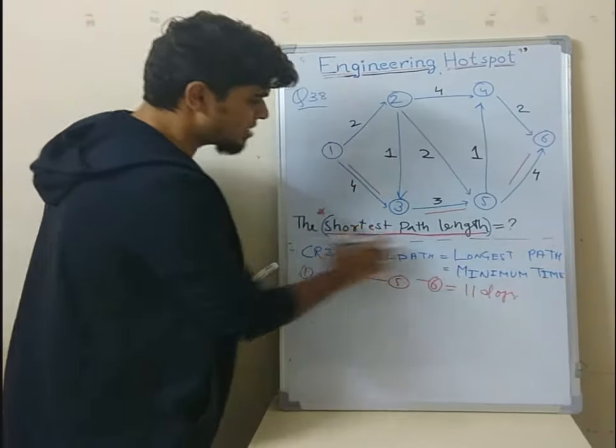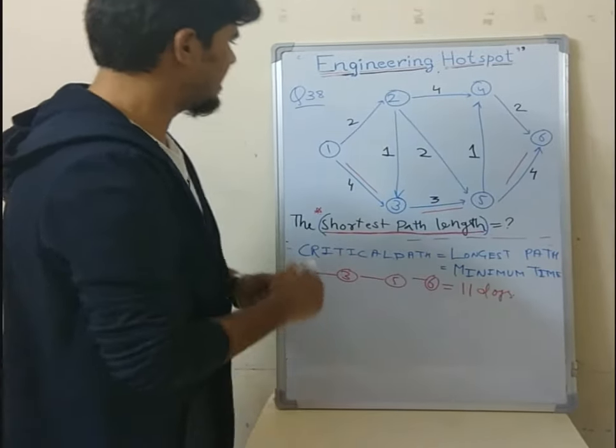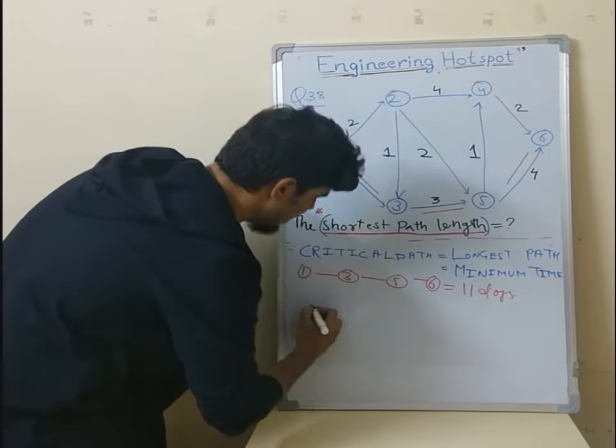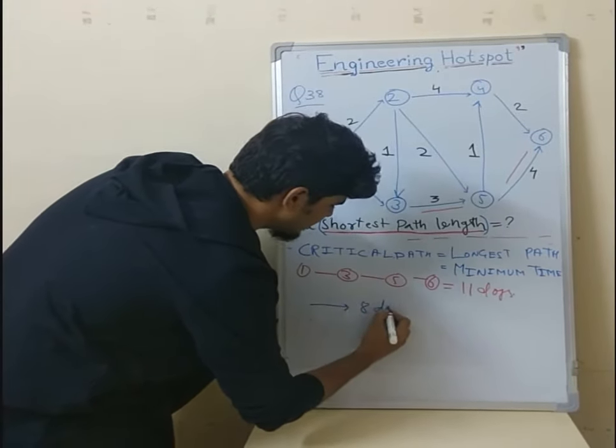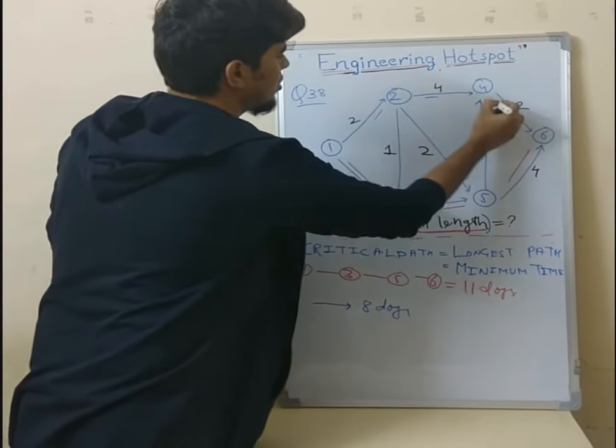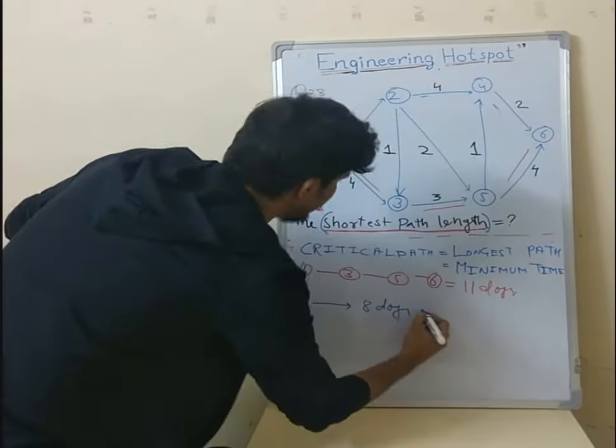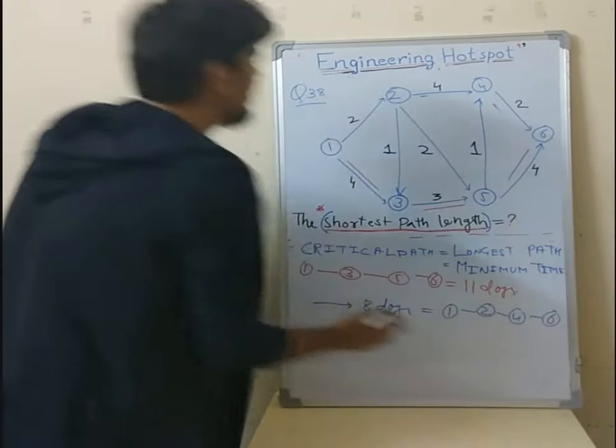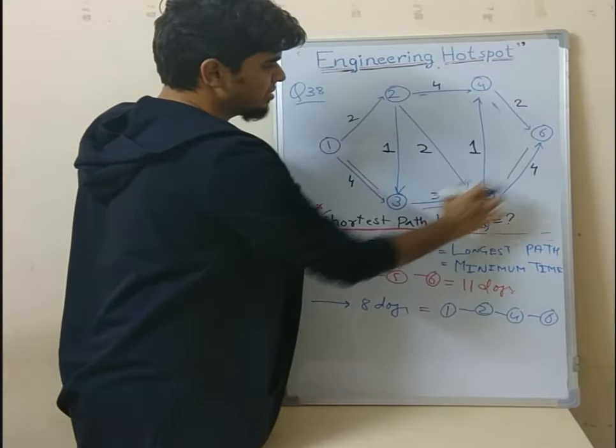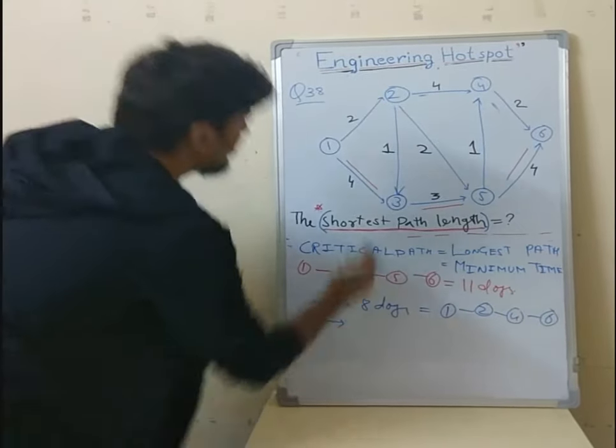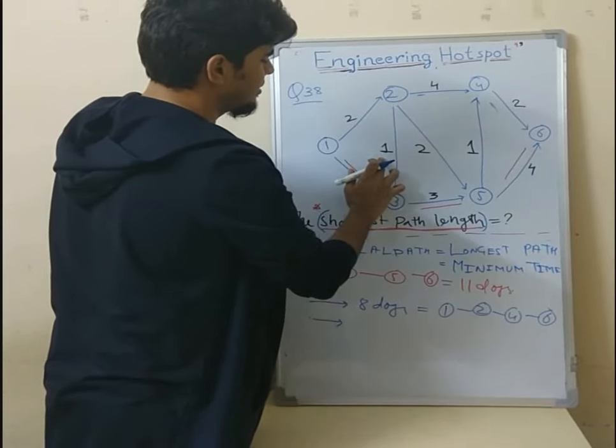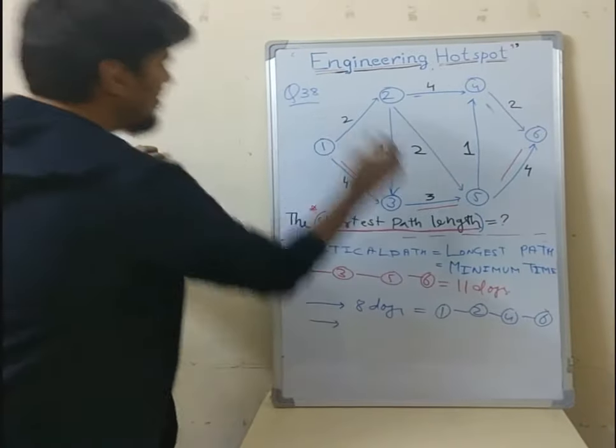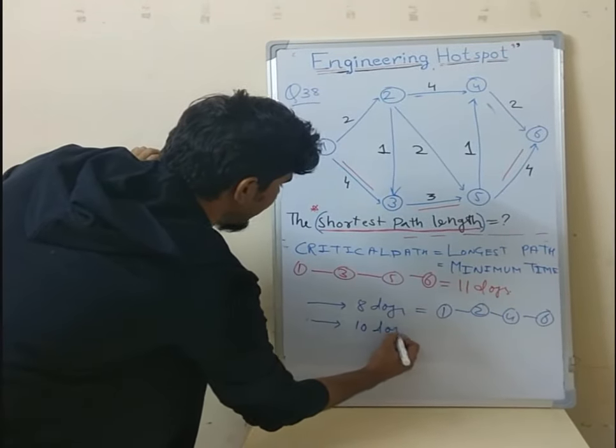So we have to go on the shortest path. If I add 2 plus 4 plus 2, then 4, 5, 6, 7, 8. Then one path from 8 days. Then I will take 1, 2, 4, 6, then 2, 3, 4, 5, 6, 7, 8, 9, 10. Then I will take the 10 days, then I will take the path 1, 2, 3, 5, 6, then 10 days.